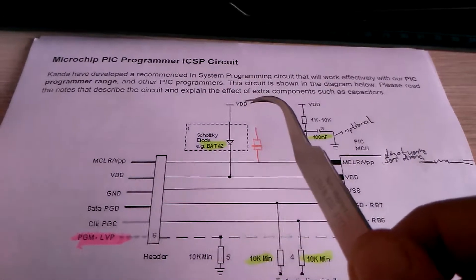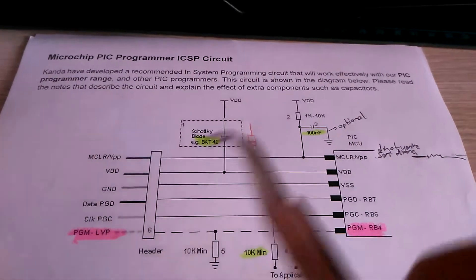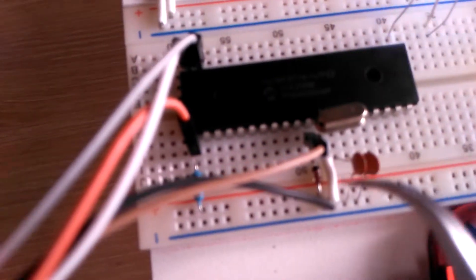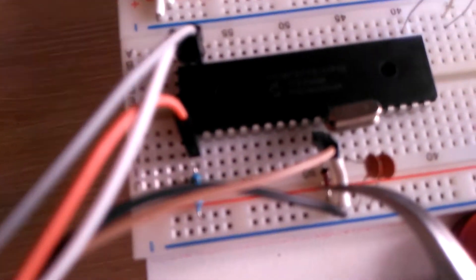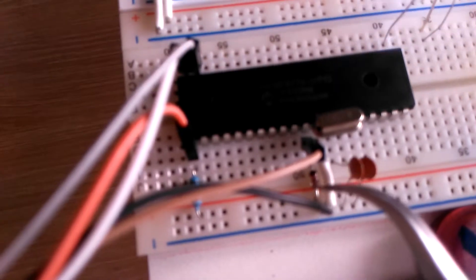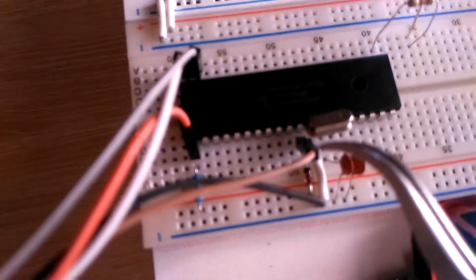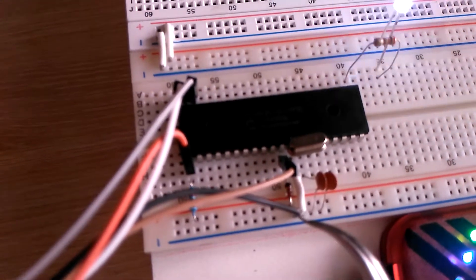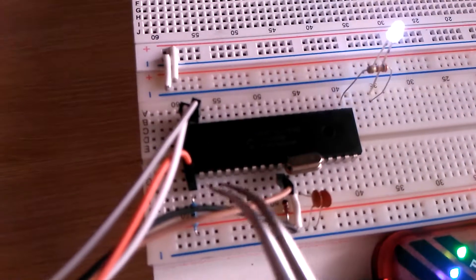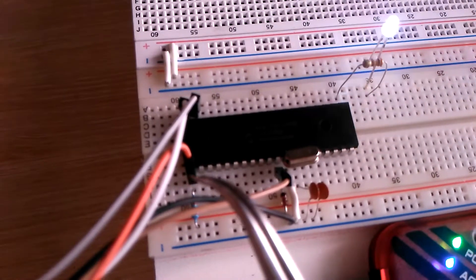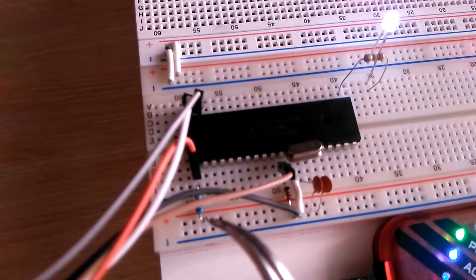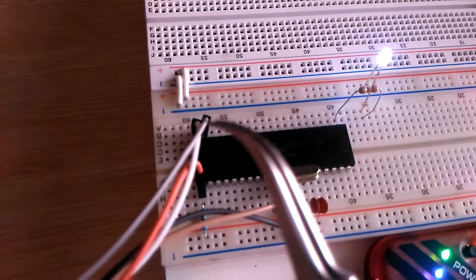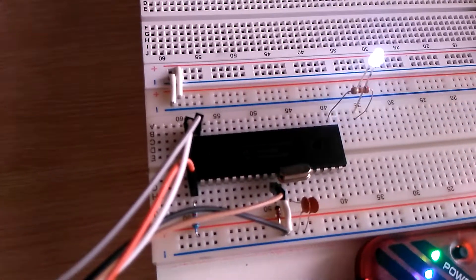The BAT42 is between VDDs. You can see in the circuit BAT42 here. And this is the programmer pin. This is the VSS pin. This is the MCL pin and this is the isolation resistor. And these are PGM and PGC pins.